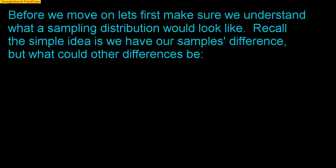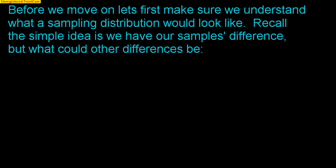Before we move on, let's make sure we understand what a sampling distribution is. The sampling distribution tells us what our sample looks like compared to many other samples. We may see our sample's difference, but it doesn't mean it's the only difference — there could be other differences based on other samples. We have to check our conditions, which will sound very familiar. And provided there are 10 successes and 10 failures, we will be able to use the normal model.